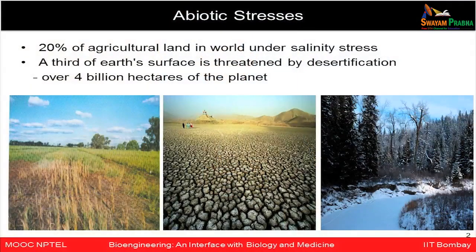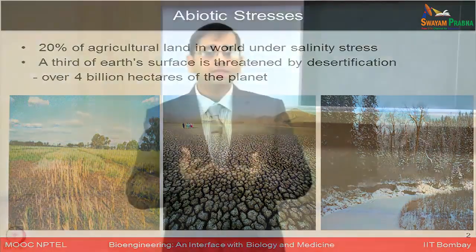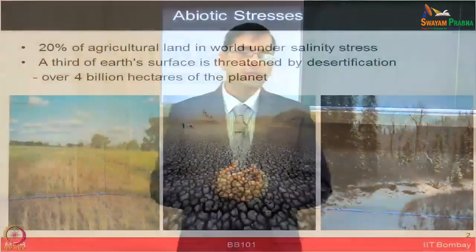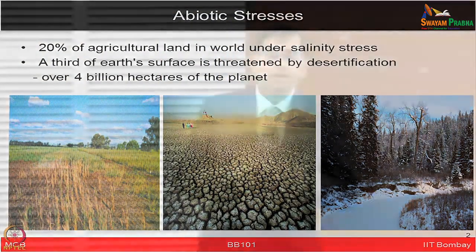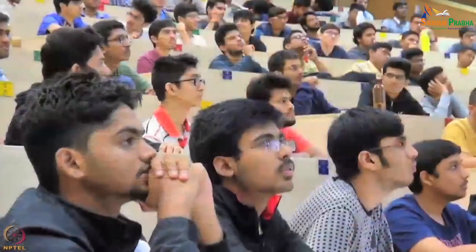Going back to my very first lecture, I started emphasizing the need to address various global challenges. Think about abiotic stresses — for example, salinity, heat, drought — all of which are severely affecting our land and cultivation area throughout the world. Almost 20% of agricultural land is getting affected because of salt stress, and large volumes of the earth are getting desertified because of drought situations happening throughout the world.